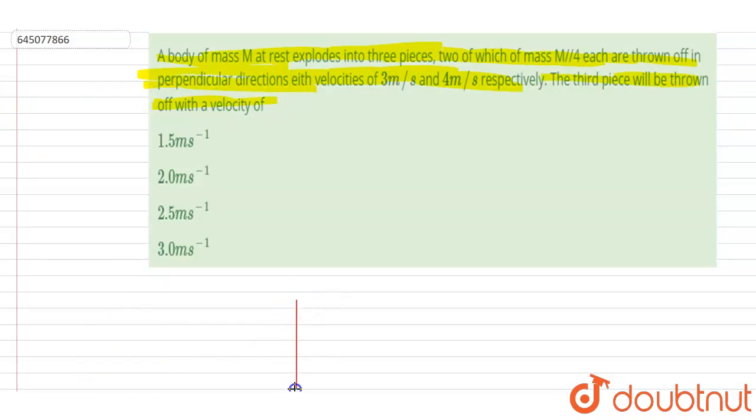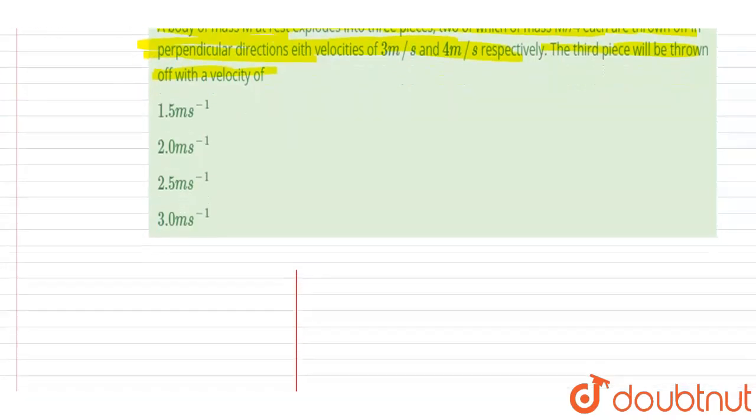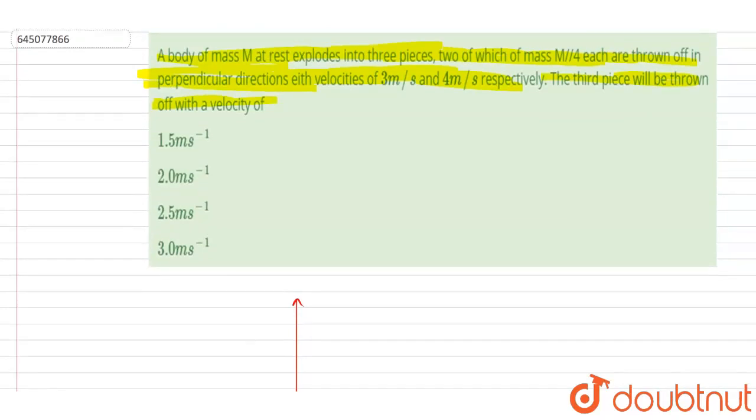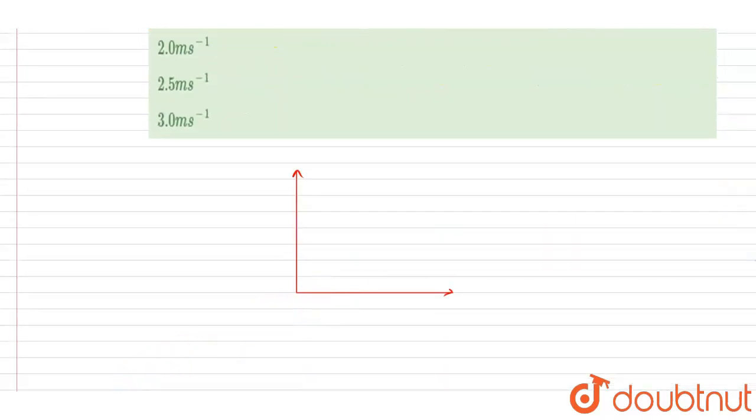So if I say this as x-axis and this as y-axis, these two are the axes. The two equal masses of m by 4 move in perpendicular directions. So let's say these are the two equal masses of m by 4 and m by 4. So they will move like in this direction and in this direction.